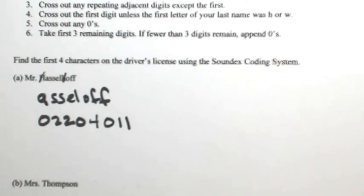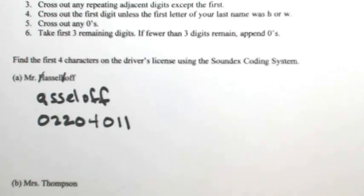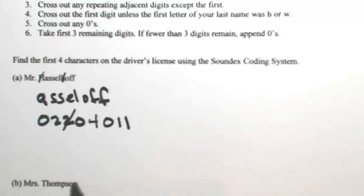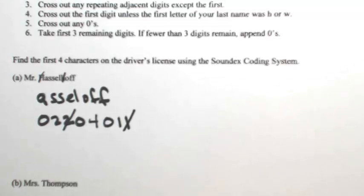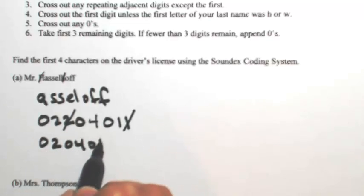So the next step is to cross out any repeating adjacent digits except the first one. When we say adjacent digits, that means they're right next to each other. It's not that they're repeating at some point in time, it's that they're literally right next to each other. So the two followed by the two, we're going to cross out the second two. The one followed by the one, so that we only have one of each. Now we have zero, two, zero, four, zero, one.